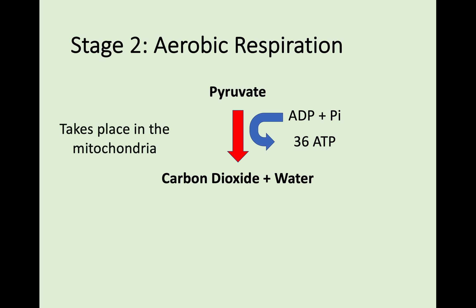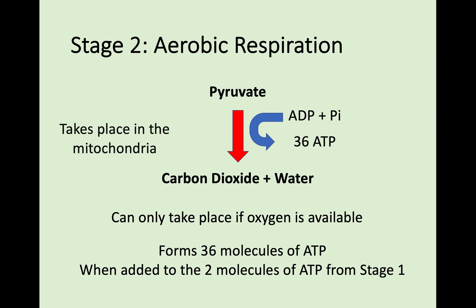You gain a lot of energy. Remember, this takes place in the mitochondria, and oxygen must be present. If we combine the 36 molecules of ATP from aerobic respiration stage two and the 2 from stage one glycolysis, we end up with a total of 38 molecules of ATP. Luckily, in the exam at the moment, you no longer need to know the exact number — you just need to remember that many molecules of ATP are produced from aerobic respiration.